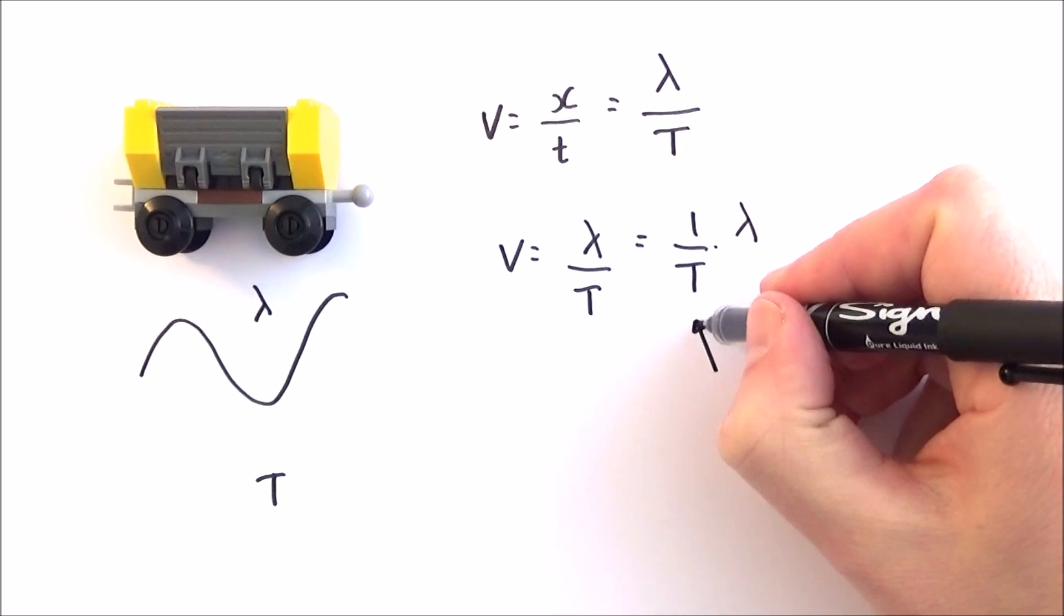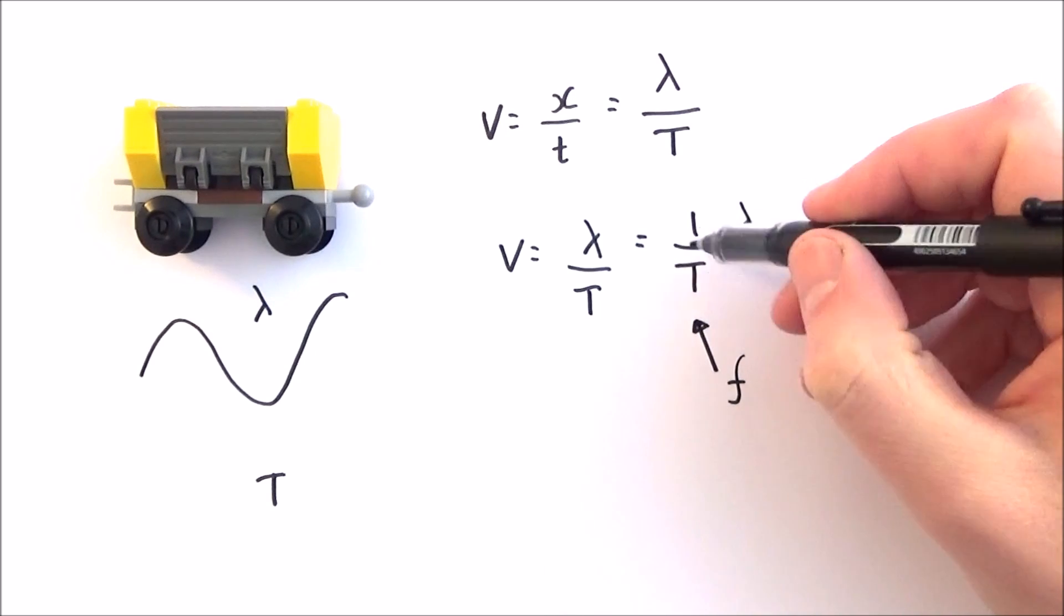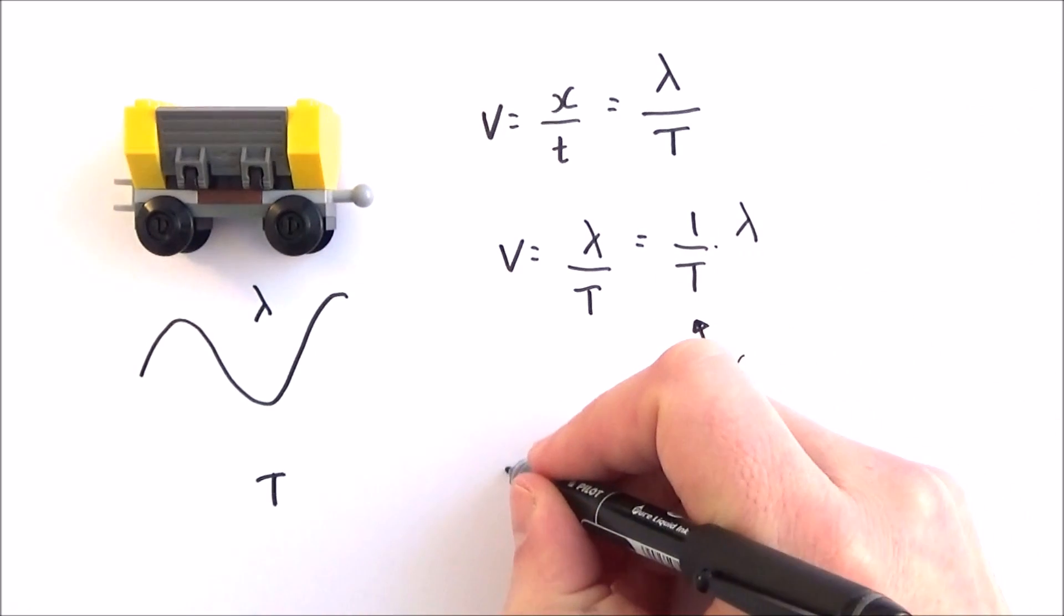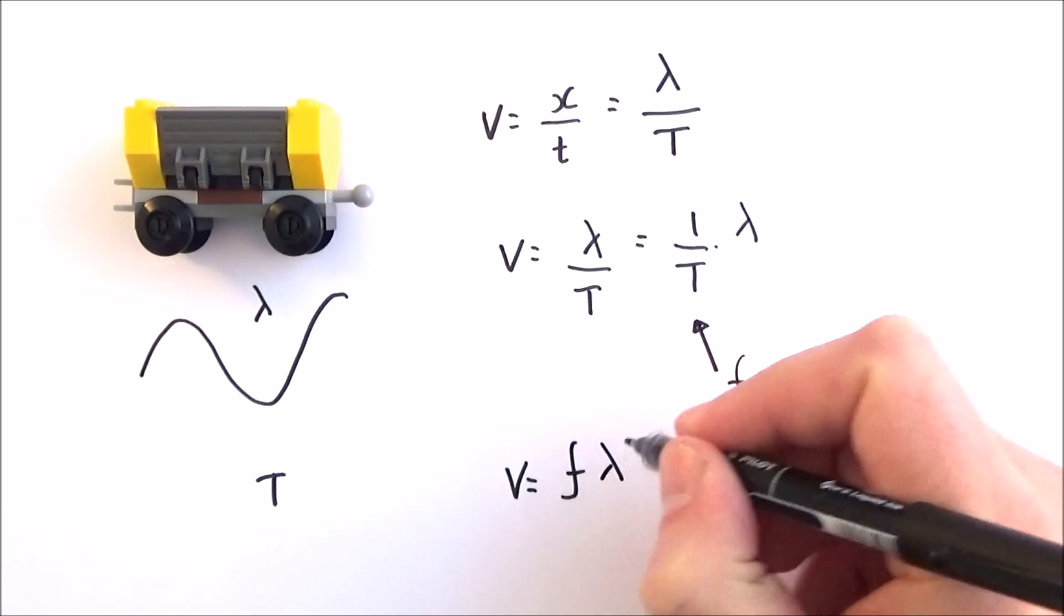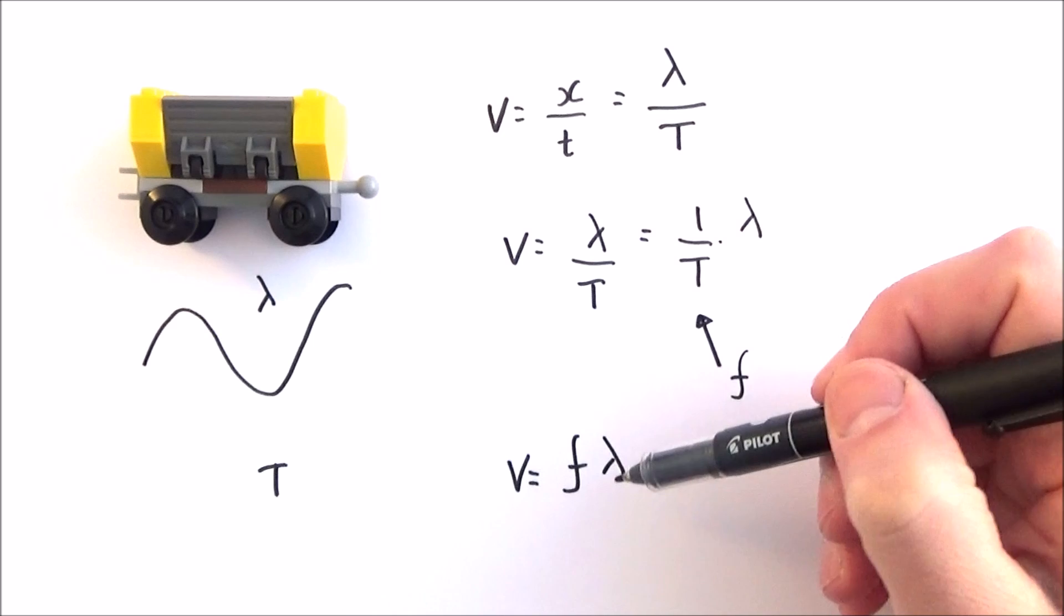However, one over T, one over the time period, is equal to the frequency of that wave. So if we replace one over T with frequency, we can say that v equals f lambda. So v, very furry lambs.